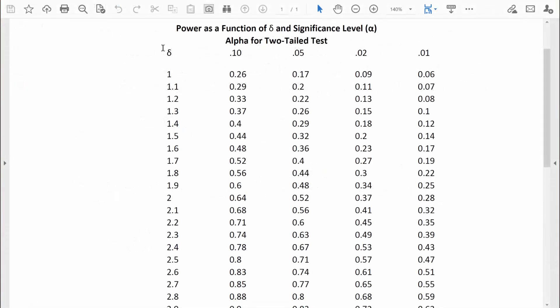Here is our delta table, our power table. We want to find a delta value of 2. Here it is right here. In that research study, they used a two-tailed test and an alpha of 0.05. So we want to come down this column until we see the row for delta of 2. And right there, we know our power level, 0.52.